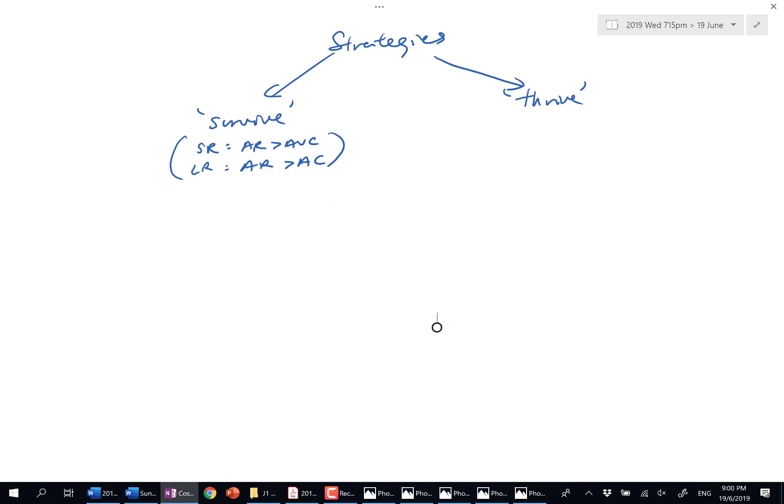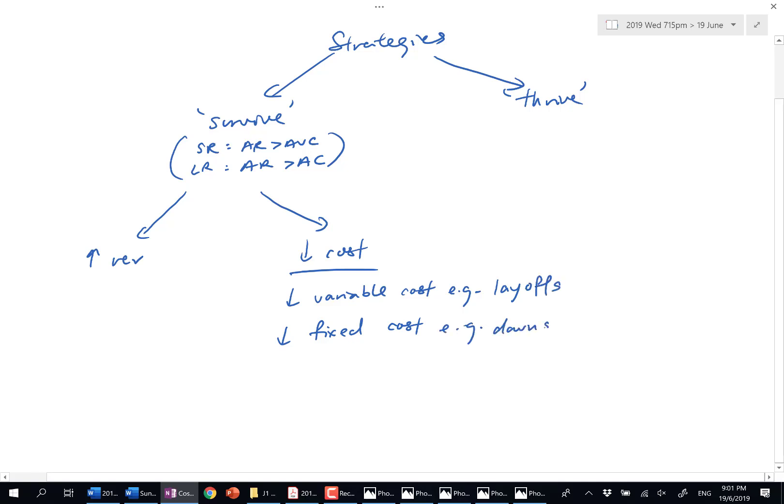So we say survive. Two ways you can survive: by increasing your revenue, you can survive by lowering your cost. You can give examples of how to lower variable cost, how to lower your fixed cost, like layoffs, this one could be downsizing, make your premises smaller.